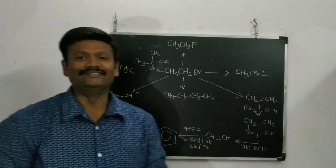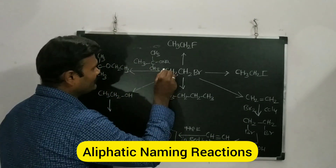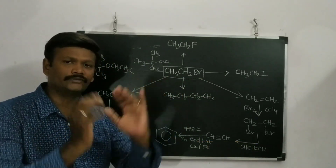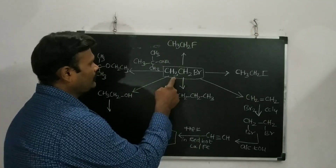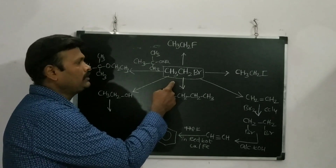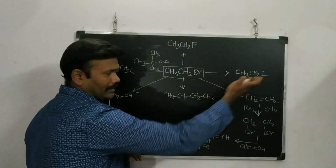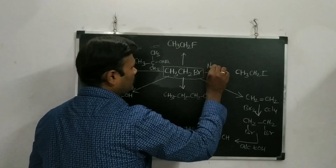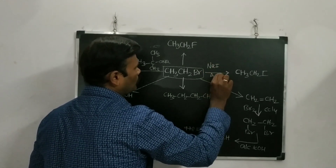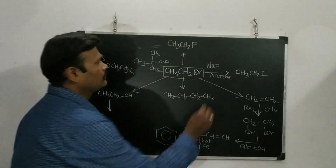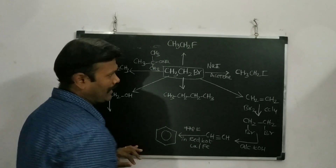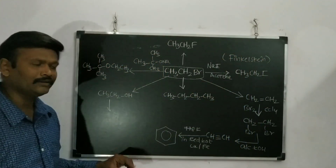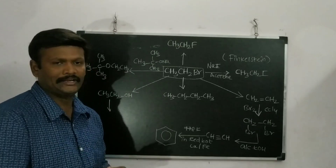We start with ethyl bromide (CH3CH2Br). From this halide, we can start our conversions and naming reactions. The halide can be converted into other halides — for example, if you want to convert chlorides and bromides into iodides, you need NaI in the presence of acetone as solvent. This gives ethyl iodide as the product. This reaction is called the Finkelstein reaction — that is the first naming reaction.